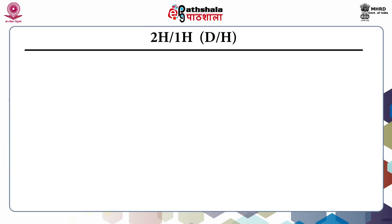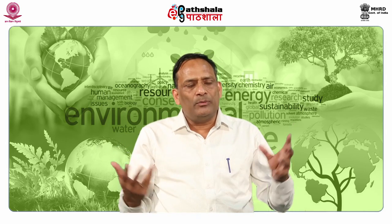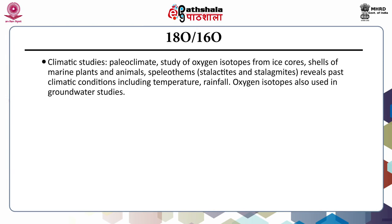The deuterium-to-hydrogen ratio is used in groundwater studies for identification and quantification of recharge, discharge, and mixing processes; interrelationship between surface water and groundwater; flow and interconnections between aquifers; and mechanism of pollution. Isotope methods for groundwater studies are very effective in arid and semi-arid conditions. Oxygen-18 to oxygen-16 ratios can be used in climatic and paleoclimate studies of oxygen isotopes from ice cores, shells of marine plants and animals, and speleothems, which reveal past climatic conditions including temperature and rainfall. Oxygen isotopes are also used in groundwater studies.